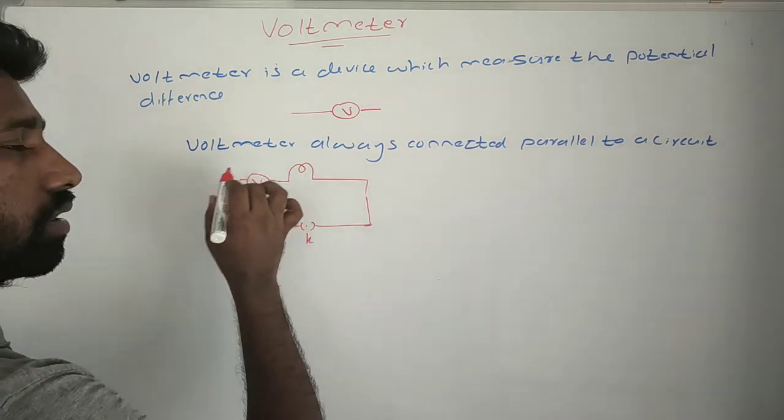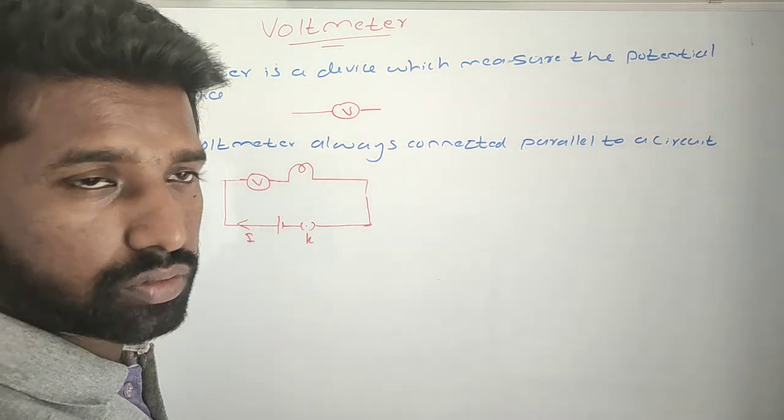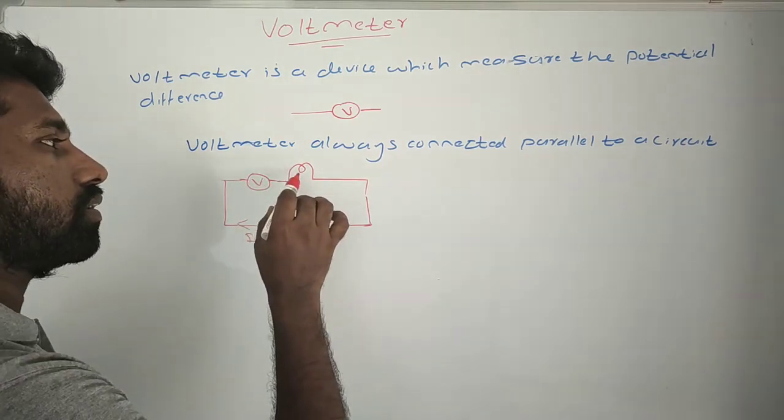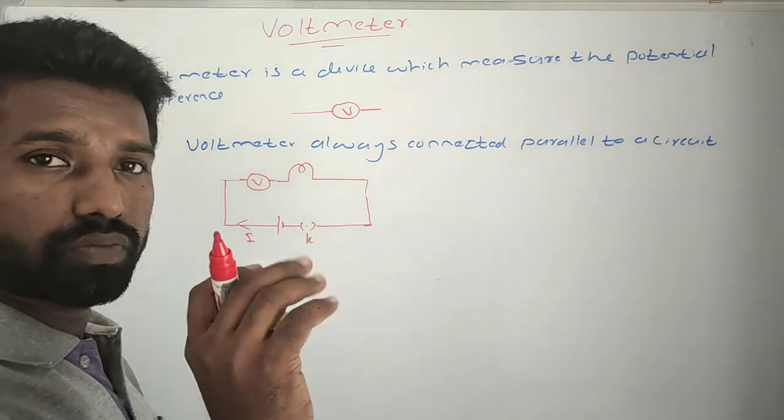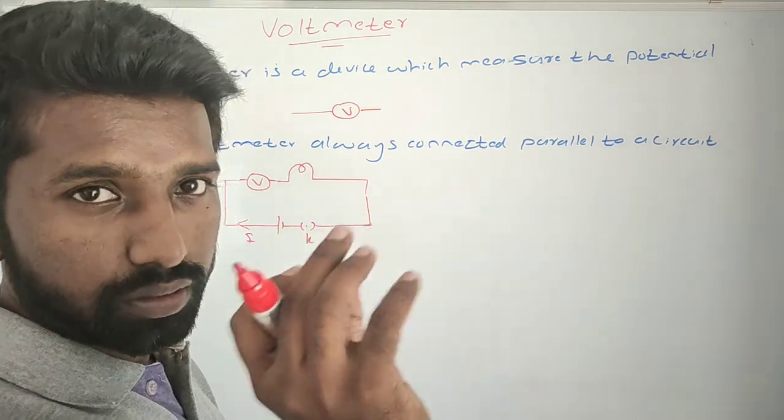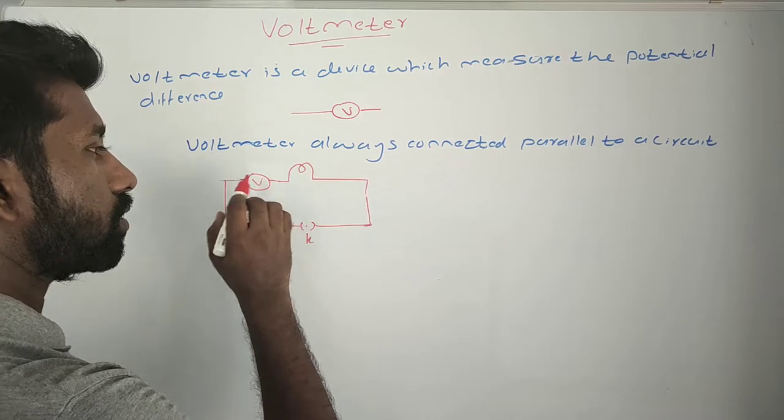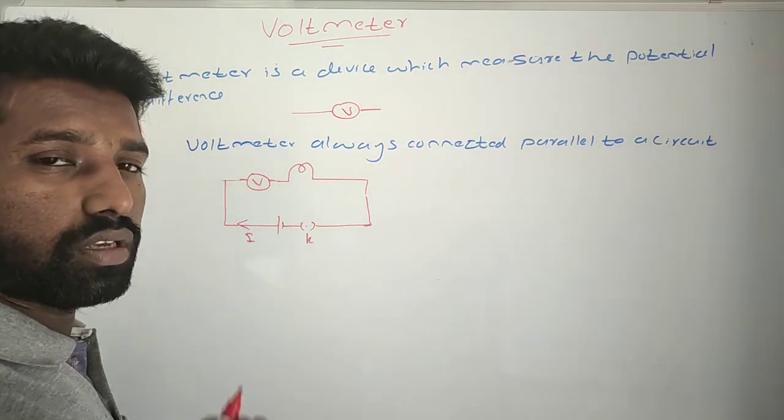Actually, this voltmeter will have very high resistance. So it will consume most of the current and very less current only this bulb will get. So the brightness of this bulb will be very small. That means it blocks the current to the circuit.